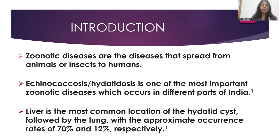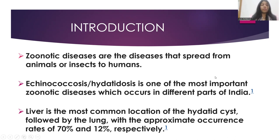Introduction. Zoonotic diseases are diseases that spread from animals or insects to humans. One such zoonotic disease, echinococcosis or hydatidosis, is one of the most important diseases occurring in different parts of India, our country being endemic to it. The liver is the most common location of hydatid cysts, followed by the lung, with approximate occurrence rates of 70% and 12% respectively.